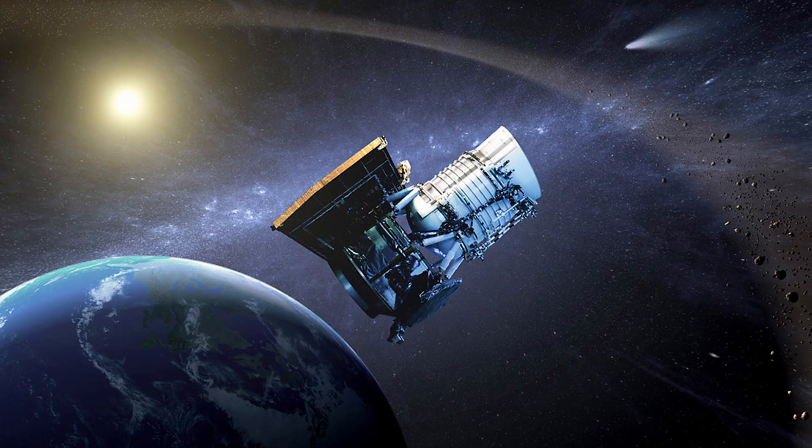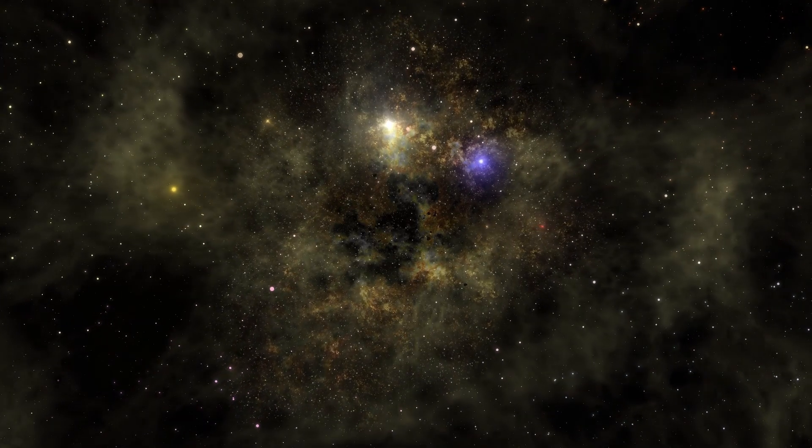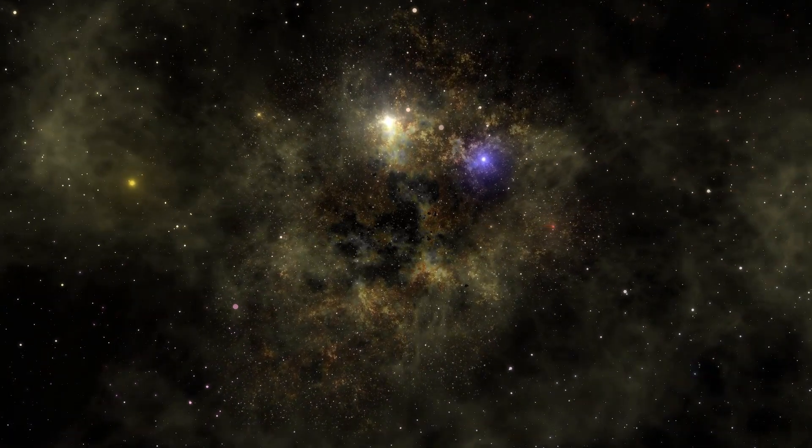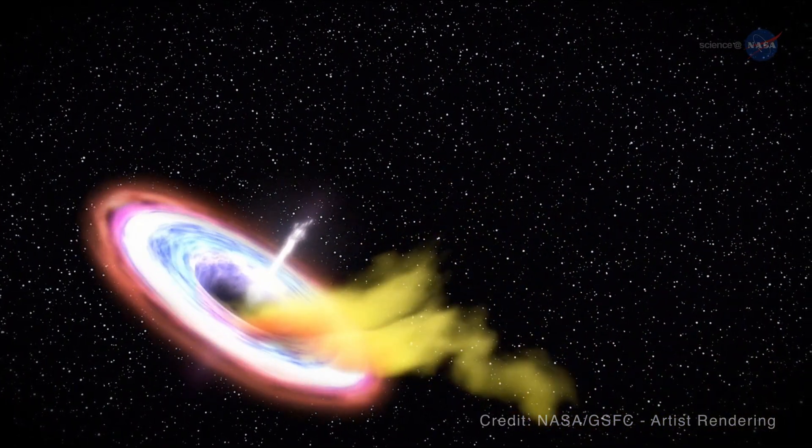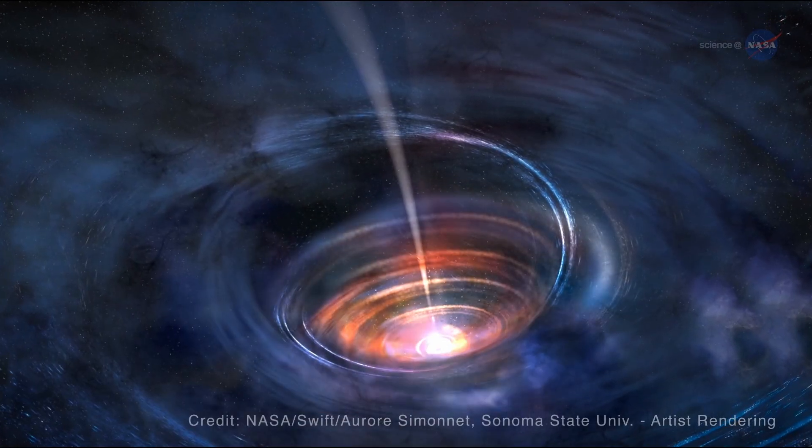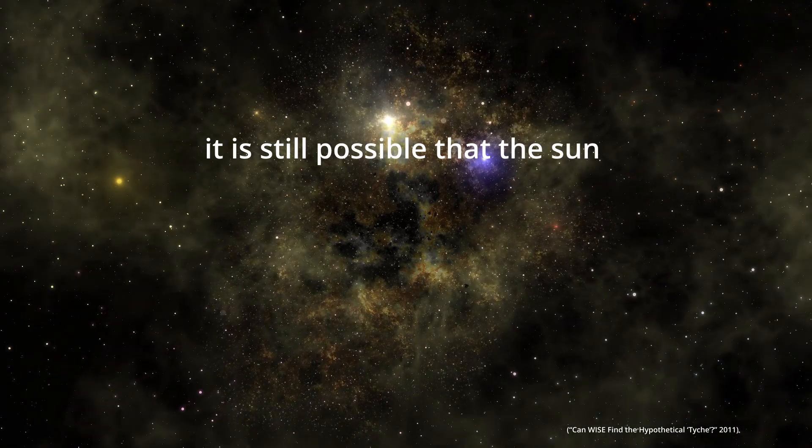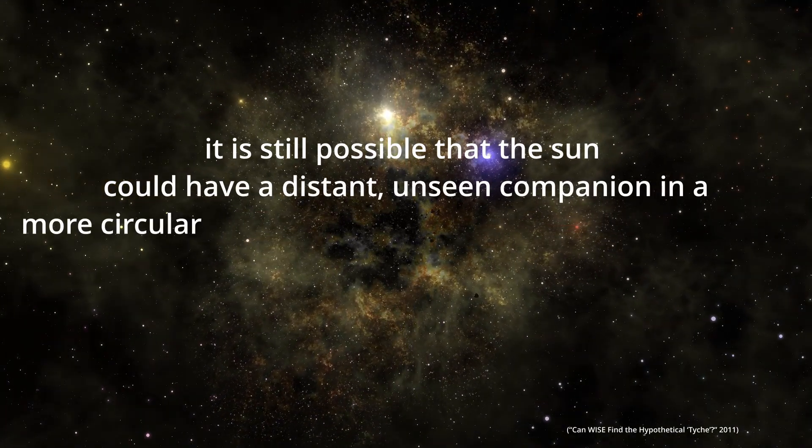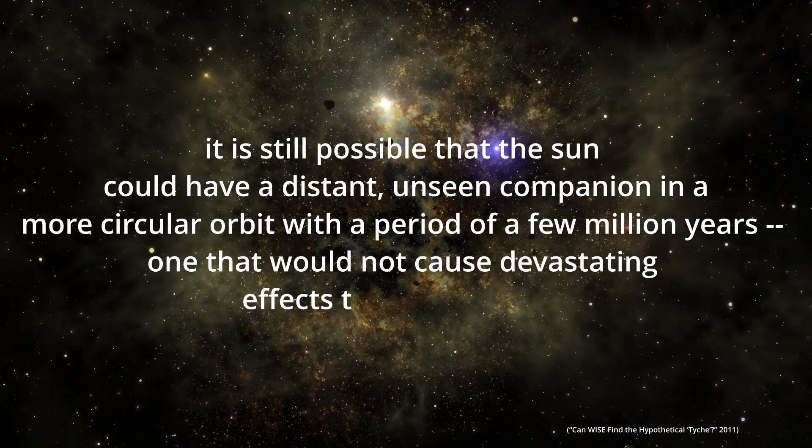The NASA WISE mission has confirmed that there's nothing larger than Jupiter within the closest 26,000 AU to the sun. Nemesis would be farther out at about 100,000 AU, but Nemesis would also be bigger and be generating light. Basically, if WISE didn't see it, it probably doesn't exist. There's still the black hole option. If there is a black hole Nemesis, we wouldn't have seen it. And there is a very small chance that there's a red dwarf or brown dwarf orbiting the sun still. NASA even says, it is still possible that the sun could have a distant unseen companion in a more circular orbit with a period of a few million years. One that would not cause devastating effects to terrestrial life.